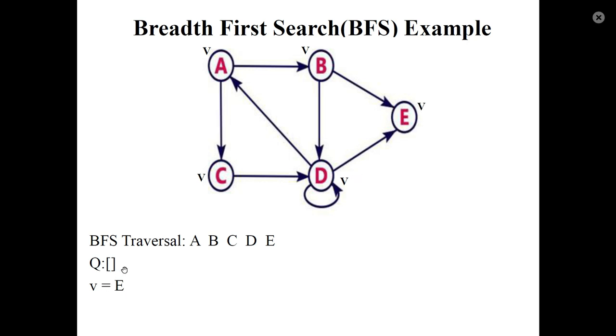Q is now empty. All nodes are visited. This is the BFS traversal order.